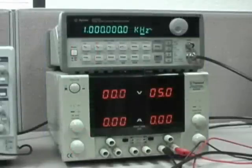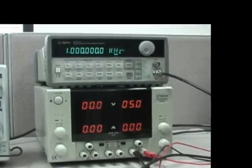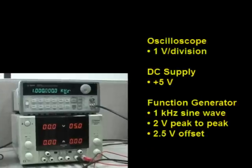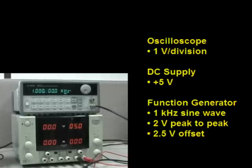We set the oscilloscope at 1 volt per division. The DC power supply is plus 5 volts. The output of the function generator is set as a sine wave with peak-to-peak voltage equal to 2 volts, offset equal to 2.5 volts, and a sine wave frequency of 1 kilohertz.